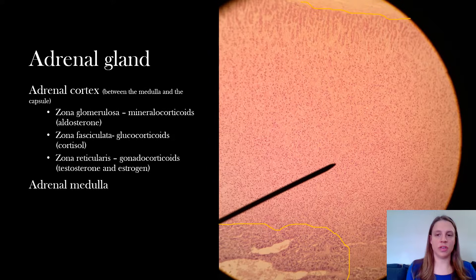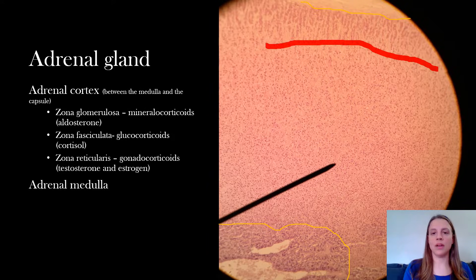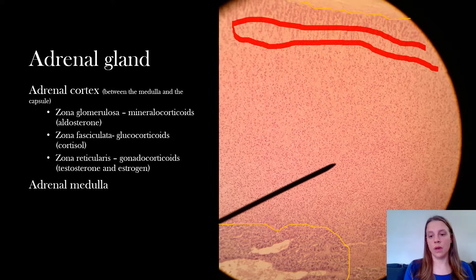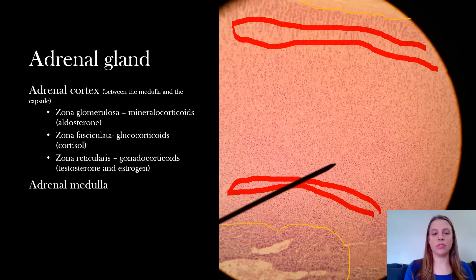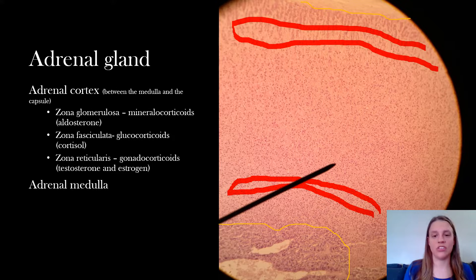To differentiate one layer from another, the best strategy is to go based on location. I can't exactly tell you where the zona glomerulosa begins and the zona fasciculata ends, but if I'm anywhere really close to the capsule I assume it's the zona glomerulosa. For the zona reticularis, if I'm really close to the medulla I assume it's the reticularis. And if I'm kind of in the middle and not really close to either, I assume it's the zona fasciculata. If anybody has better ways to differentiate between the layers I would love to hear it.